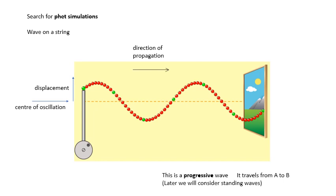This is a progressive wave. A progressive wave basically travels from A to B — it goes from one place to another. Later on we're going to talk about standing waves, but don't worry about standing waves yet. This is a progressive wave; it goes from A to B.